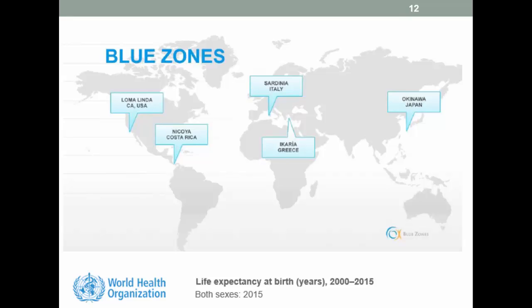Buettner identified a number of Blue Zones around the world which are worth having a look at — some in America, Sardinia, Okinawa, and there's also one in China which I'll look at in detail. I'll link this page to some World Health Organization data on life expectancy at birth, just to emphasize that quite a lot of data is available.